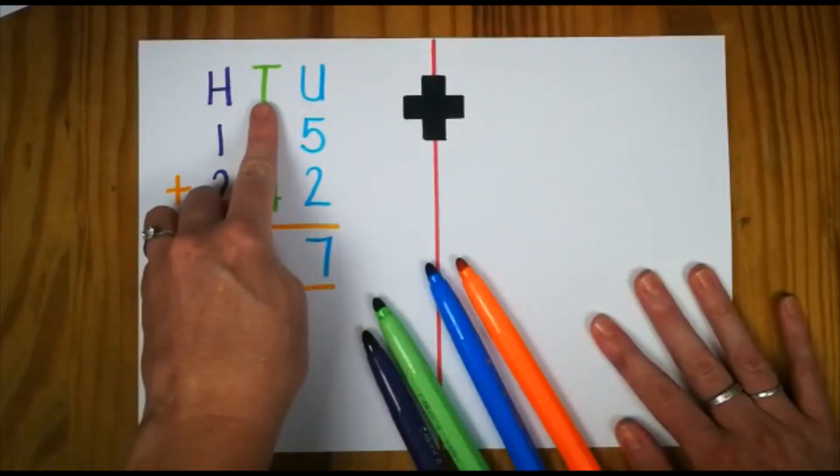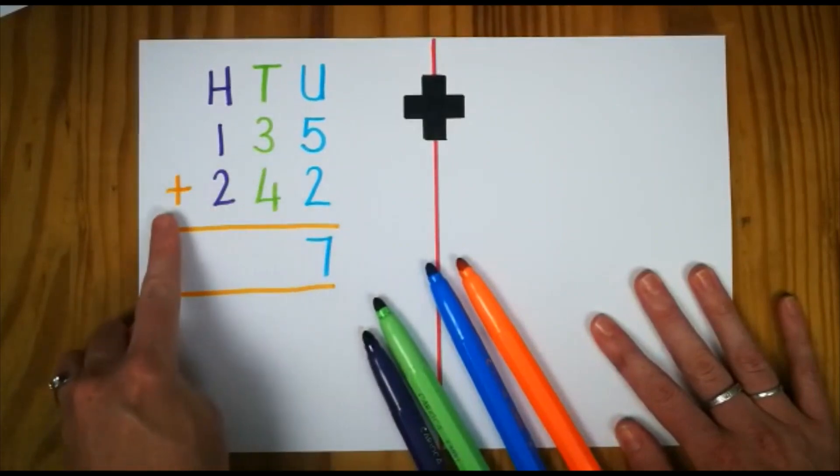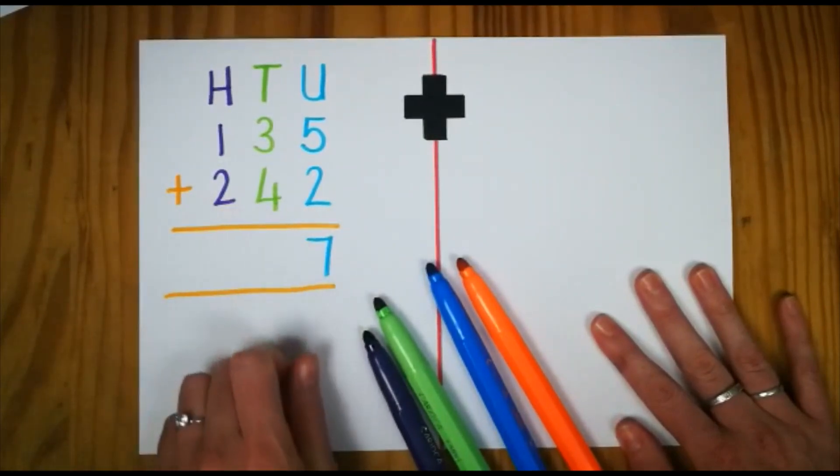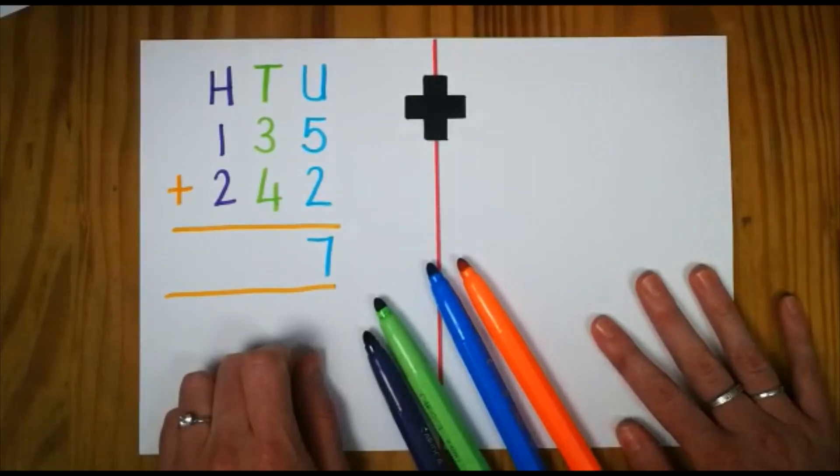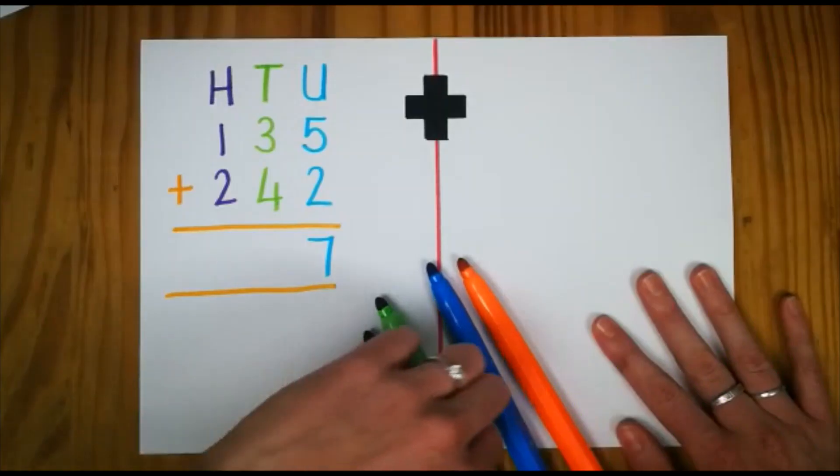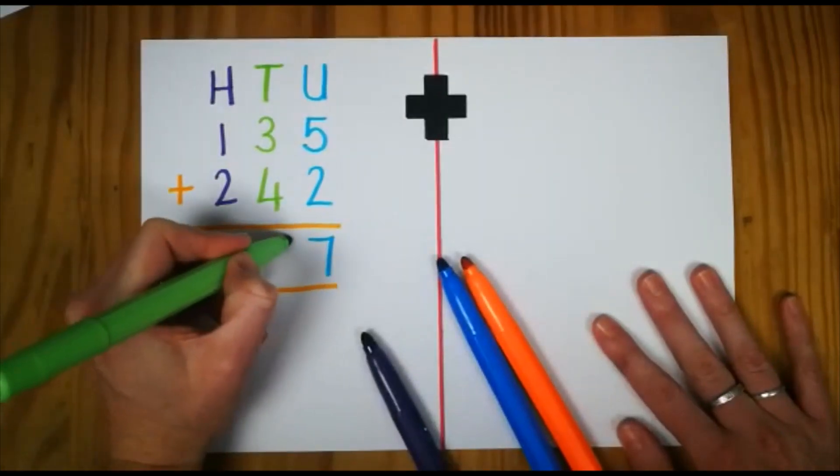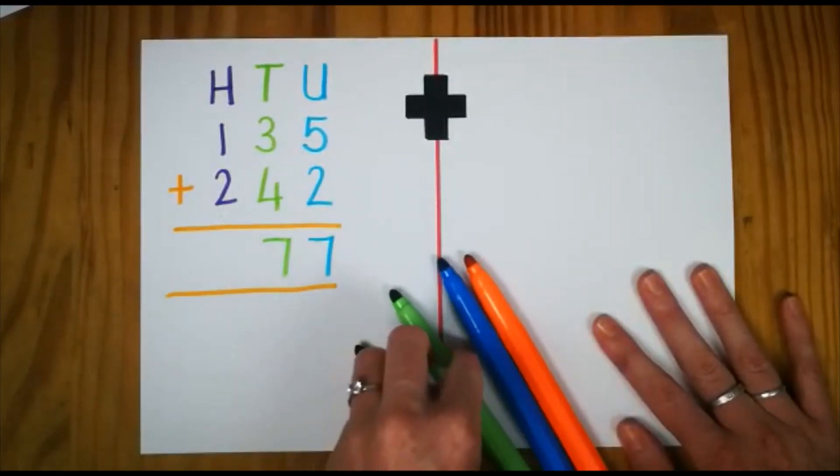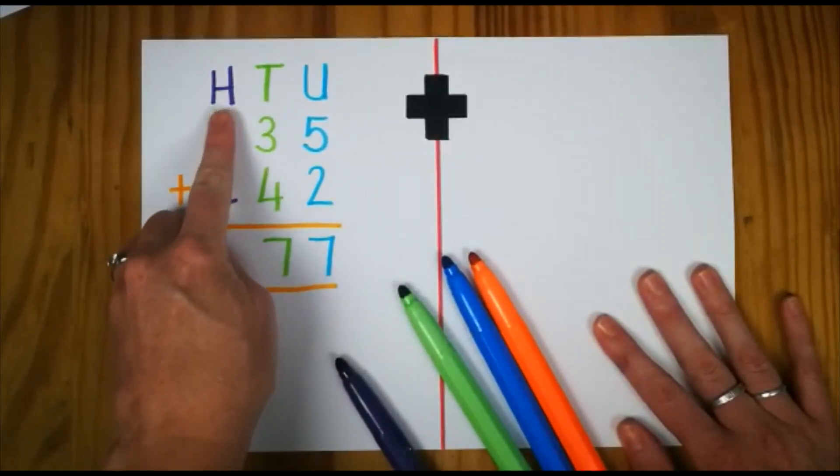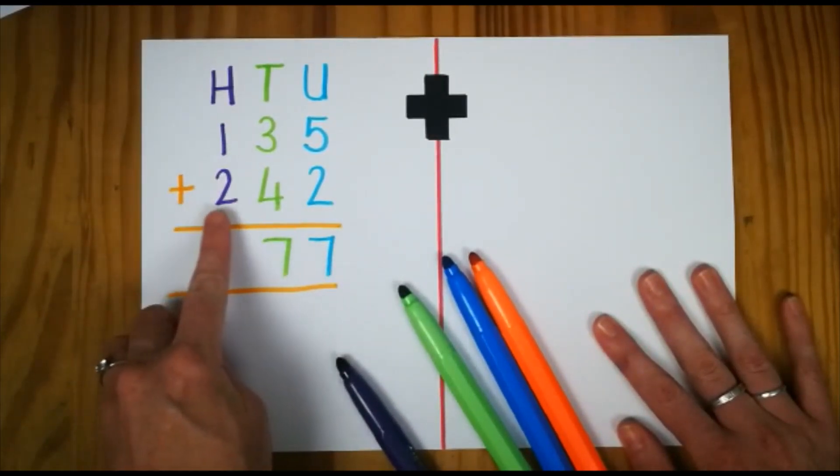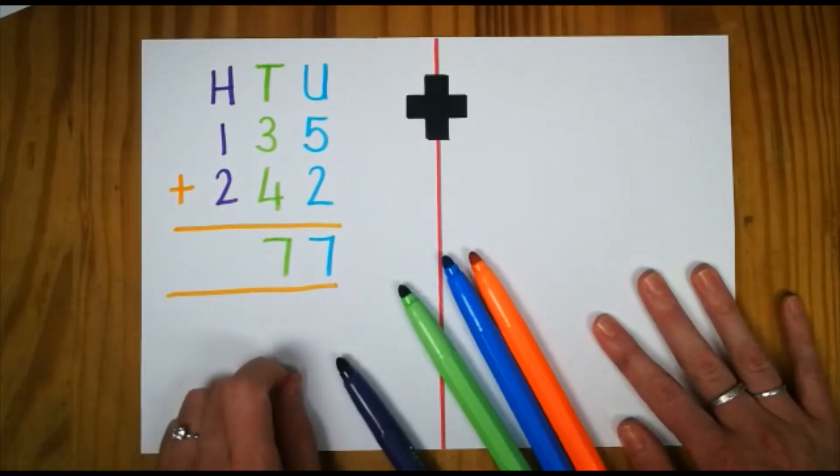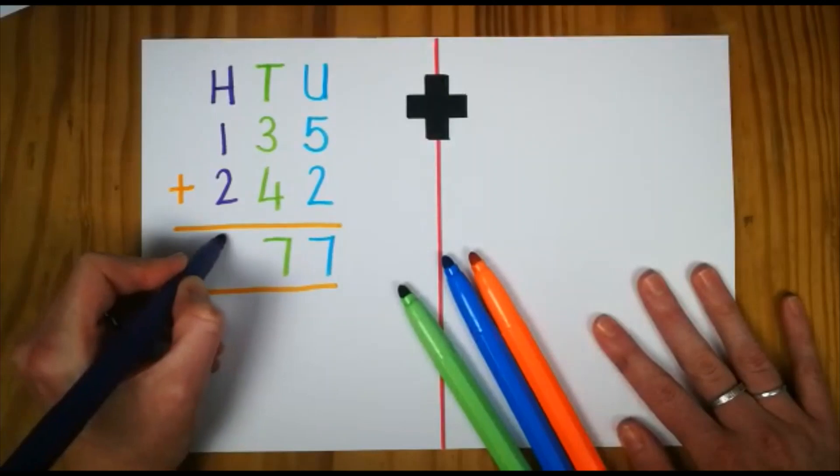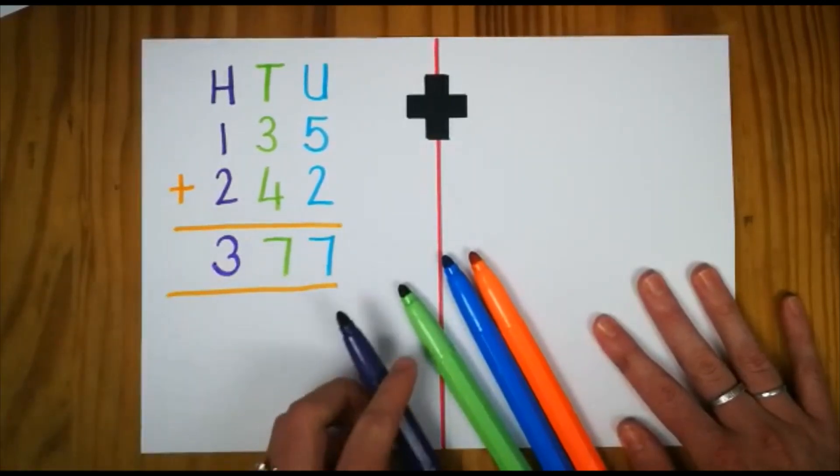Let's add our tens. 3 plus 4. What is 3 plus 4? 7. And let's add our hundreds. 1 plus 2. What is 1 plus 2? 3. And there's our answer.